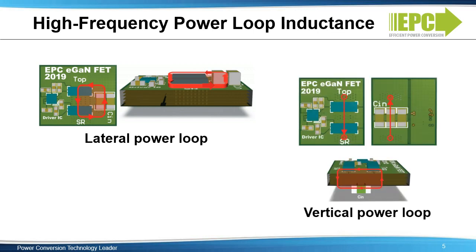In contrast, the vertical layout places the input capacitors and transistors on opposite sides of the PC board, with the capacitors located directly beneath the devices to minimize the physical loop size. In this layout, the loop is connected vertically through the PC board using vias. For the vertical power loop to be most effective, the board thickness must be minimized.